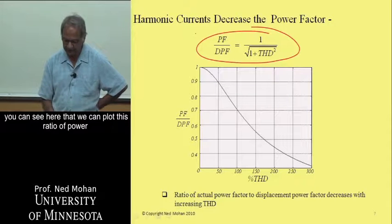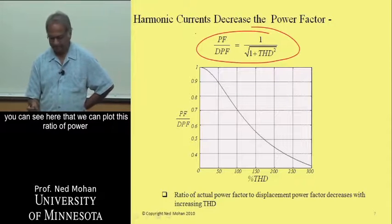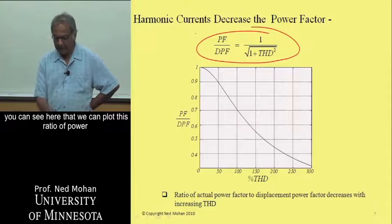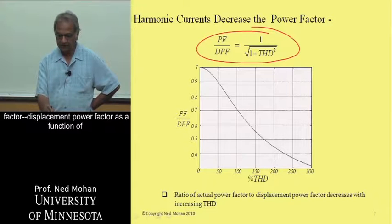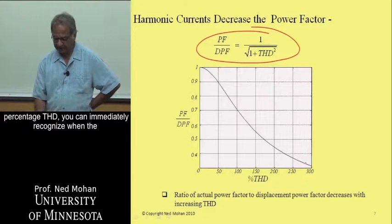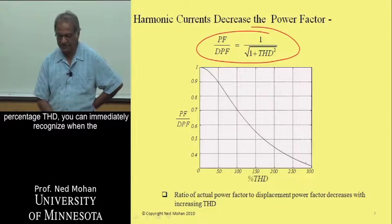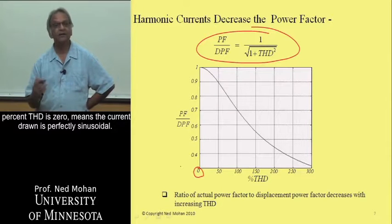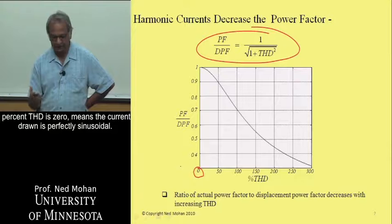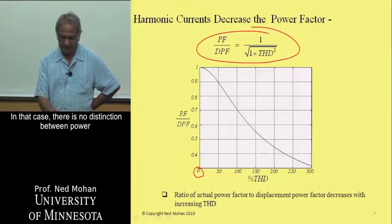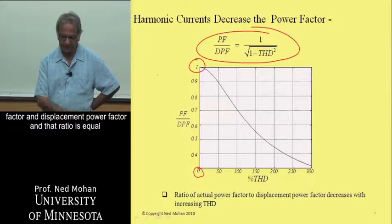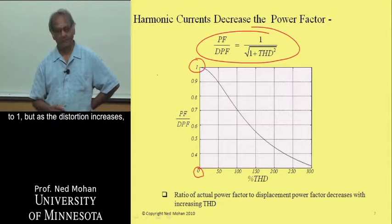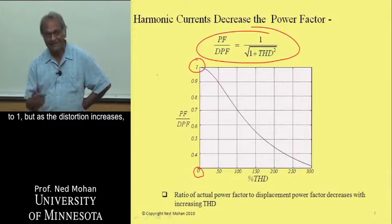That the power factor over the displacement power factor from the equation that we saw earlier is given by this. And you can see here that we can plot this ratio of power factor to displacement power factor as a function of percentage THD. You can immediately recognize when the percentage THD is 0, means the current drawn is perfectly sinusoidal. In that case, there is no distinction between power factor and displacement power factor, and that ratio is equal to 1.